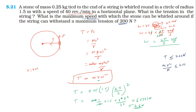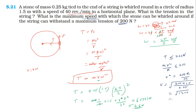The tension in the string comes out to approximately 6.57 newtons. For the maximum speed: T_max = 200 N, so using T = mv²/r gives v = √(T_max × r / m), which gives approximately 35 meters per second.